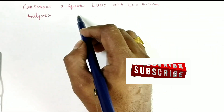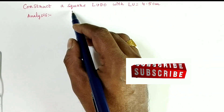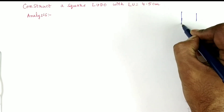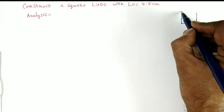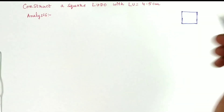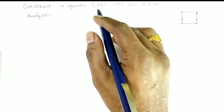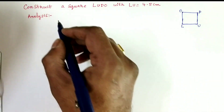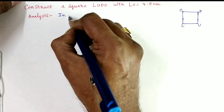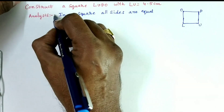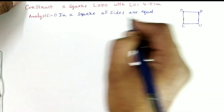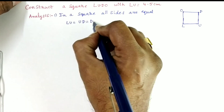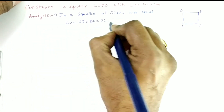Draw a rough diagram of square LUDO. In a square, all sides are equal. Therefore, LU = UD = DO = OL = 4.5 cm.